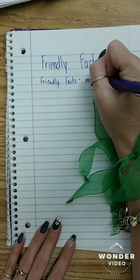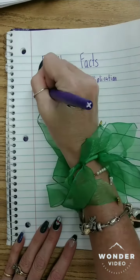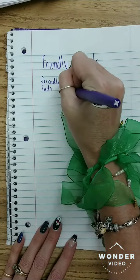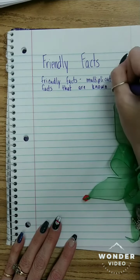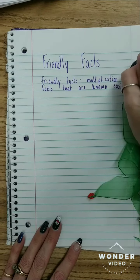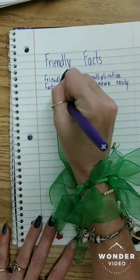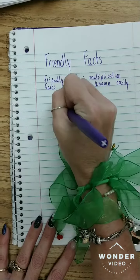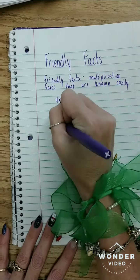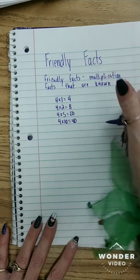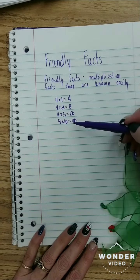There are multiplication facts that are known easily, and that varies per student. Some students, their friendly facts are like, let's say we're doing our fours tables: four times one is four, four times two is eight, four times five is 20, and four times 10 is 40. Those are our friendly facts because most kids know their ones and tens, and then their twos and fives are really easy for them to compute.